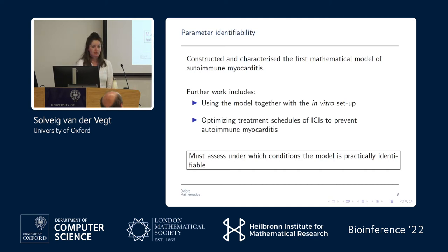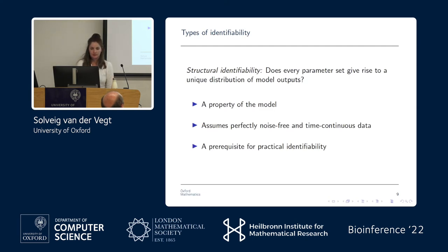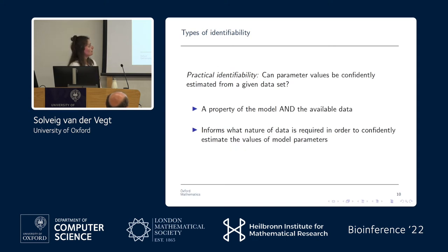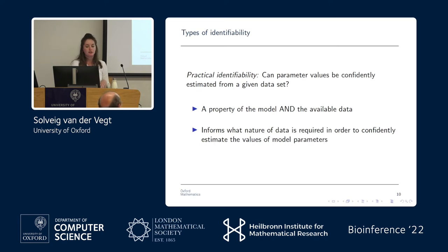To do that we need to assess whether our model is practically identifiable. There are two types of parameter identifiability: structural identifiability asks whether every parameter set gives rise to a unique distribution of model outputs — it assumes perfectly noise-free, time-continuous data and is a property of the model alone. This is a prerequisite for practical identifiability. Practical identifiability then asks whether parameter values can be confidently estimated for a given data set, making it a property of both the model and the available data. Importantly, this analysis can be done before you have data to inform what data you actually need.